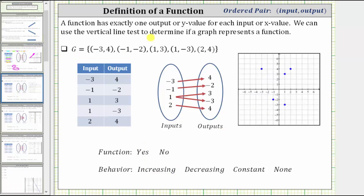Our next example is set G, again with five ordered pairs listed horizontally and in a table. Notice the input of one appears twice: once with an output of three and once with an output of negative three. This means we do not have a function, because a function has exactly one output for each input — and here the input of one has two different outputs: three and negative three. In the mapping, one maps to both three and negative three, confirming we do not have a function.